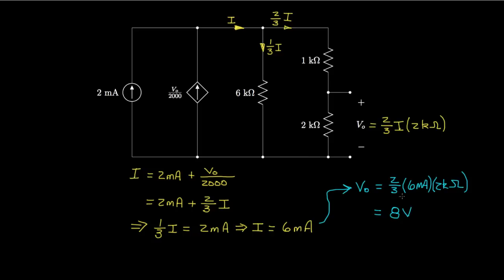At that point, we've solved for the desired voltage across the 2-kilohm resistor, and this is an example of how we might apply these ad hoc methods for a circuit that has a dependent source.